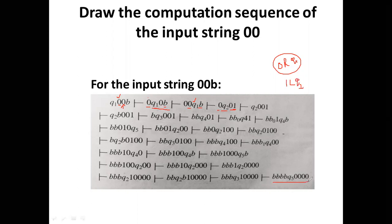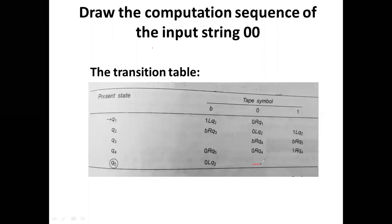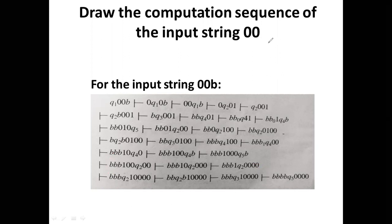Eventually we reach the last move: blank B B B q5 0 0 0 0. We reach the current state q5, which is the final state, and there are no further transitions. The Turing machine confirms that the input string '00' is accepted.